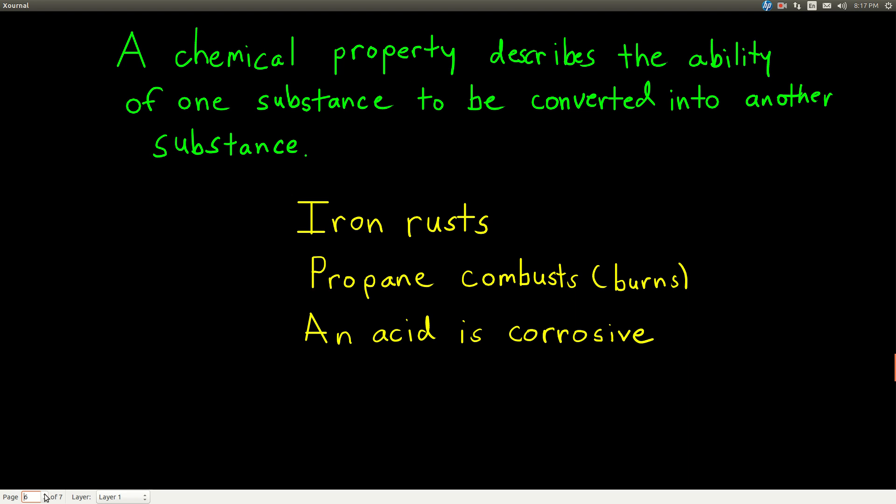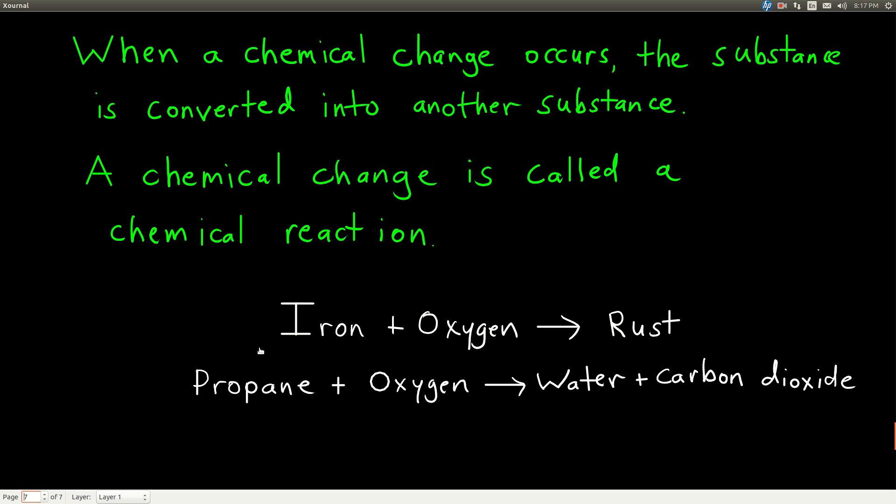Now, just like we had physical properties and physical changes, we have chemical properties and chemical changes. So, when a chemical change happens, that's the actual process of that substance being converted into something else. And we call this a chemical reaction, which we'll see a lot of later on.